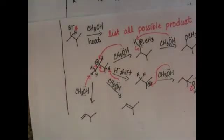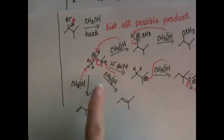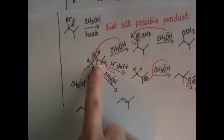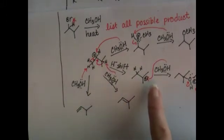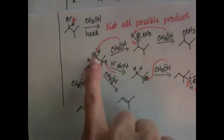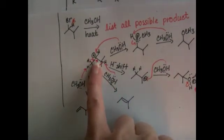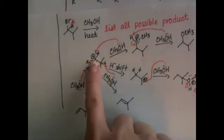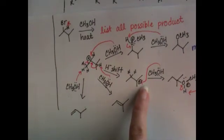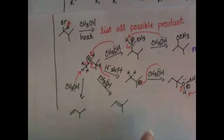There is actually one more E1 product for this reaction. Don't forget about the rearrangement. Rearrangement is not exclusive to SN1. When you make a carbocation, if it can, it will rearrange to make a more stable carbocation, whether you're doing elimination or substitution.